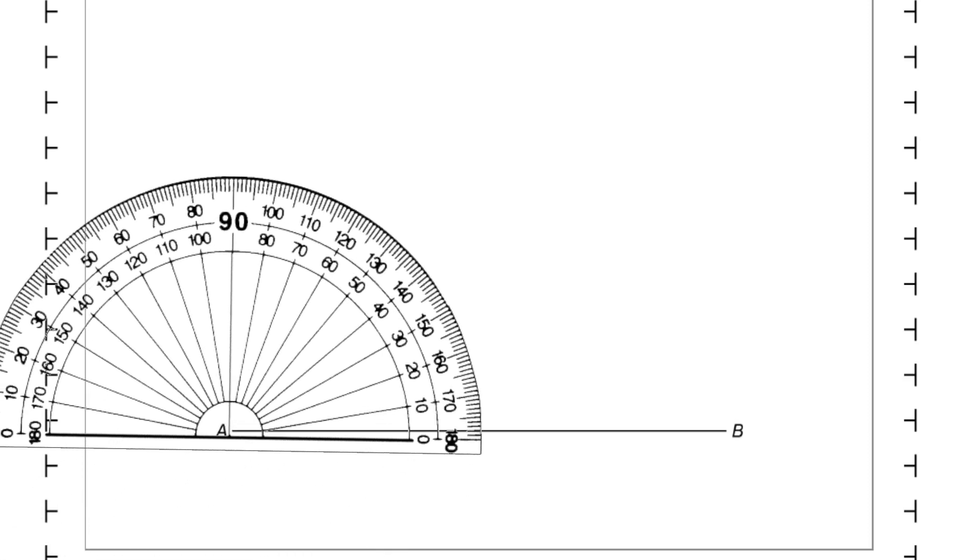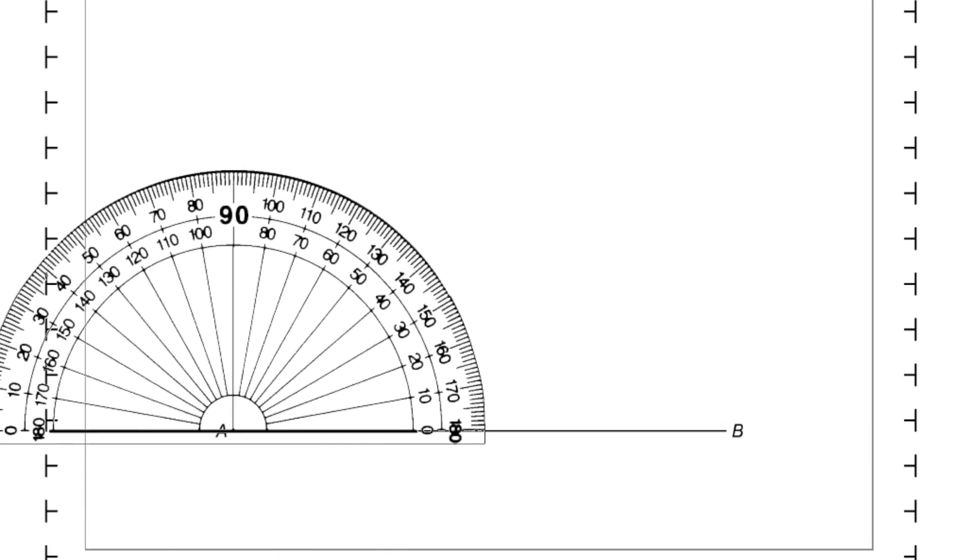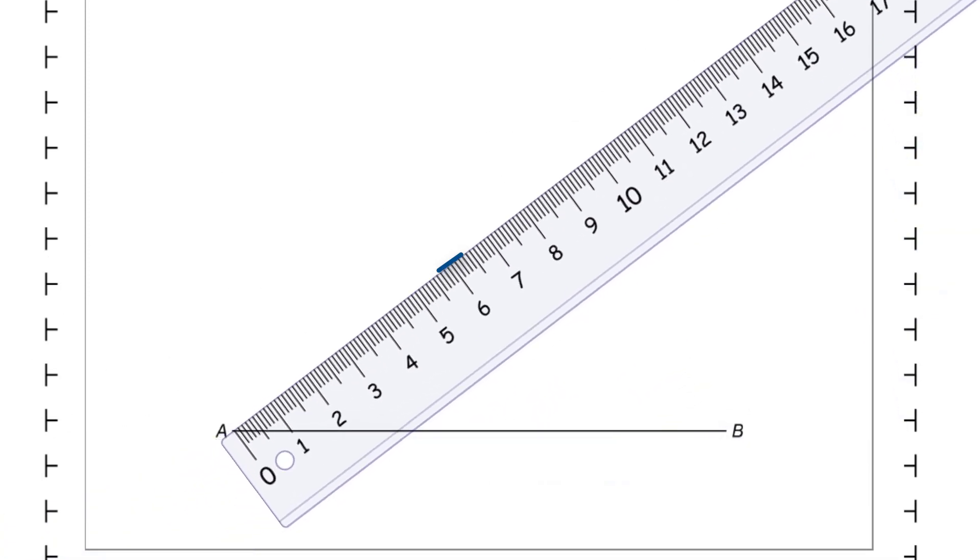Lay it along the line AB with the center of the protractor at A. And then a protractor always has two scales. You want to pick the scale that starts from zero. In this case, that's the inner scale. So, counting around from zero up to 37. I'm going to put a little mark at 37 degrees. And once I've done that, I'm going to remove the protractor and get out our ruler instead. I'm going to line up the ruler. So,